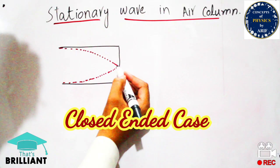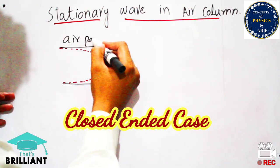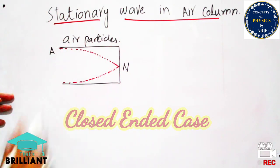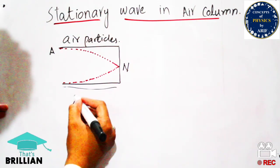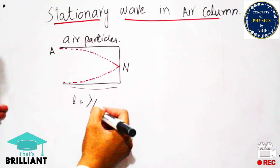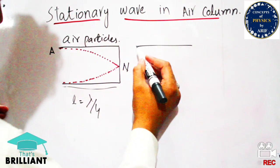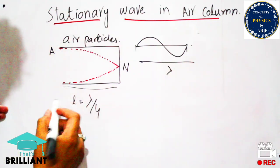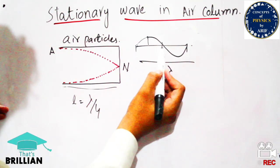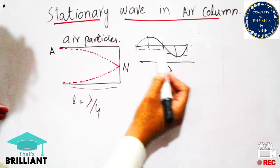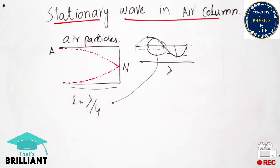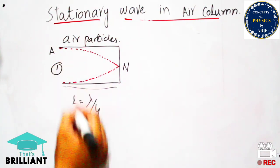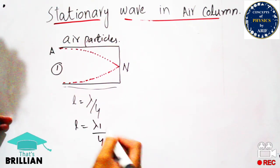Nodes are produced at the closed point and antinodes are produced at the open point. To understand this, we need to calculate the length of the pipe in terms of wavelength. The length of the pipe can be considered as lambda by 4, because it is the fourth part of a complete wavelength. When we look at one full sinusoidal wave and divide it, we get lambda by 2, and half of that is lambda by 4. So the total length of this pipe equals lambda by 4. For mode 1: L = λ₁/4.